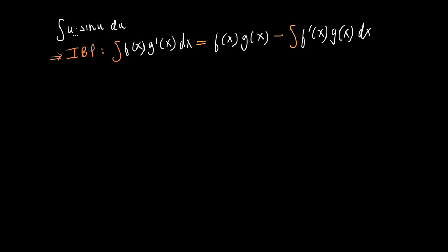If I take the derivative of sine of u, I will get cosine of u, which is neither simpler nor more complicated.